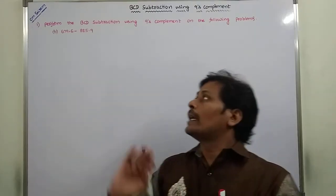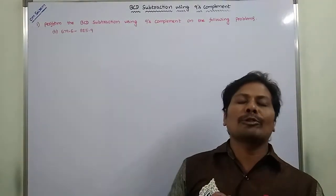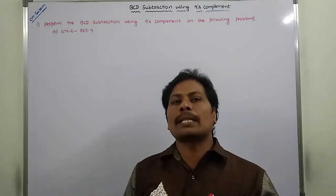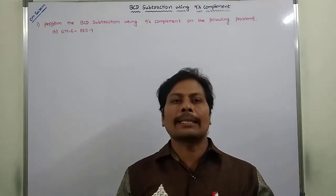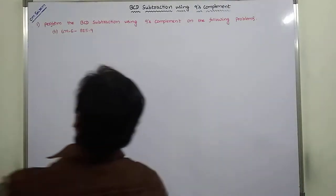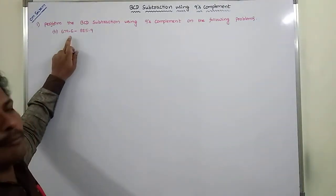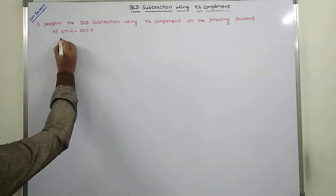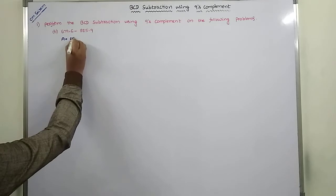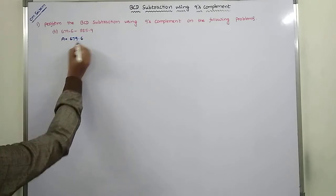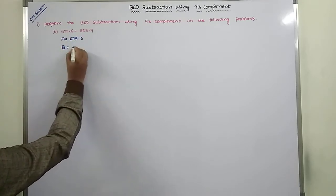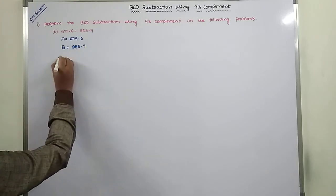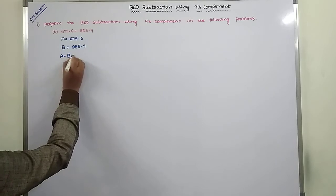In this video, we have to solve another example problem: BCD subtraction using nice complement. The problem is 679.6 minus 885.9. So here, A is equal to 679.6 and B is equal to 885.9. We have to perform A minus B.